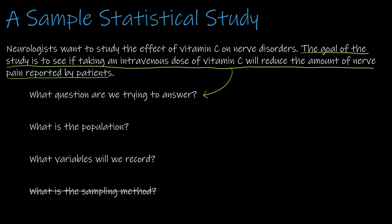What is the population? It doesn't say specifically, but we're probably looking at people with nerve disorders — possibly a specific nerve disorder, since different medications can work differently on different nerve disorders. What variables will we record? We're going to record the vitamin C dosage and the nerve pain reported by patients — what changes what.